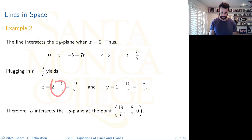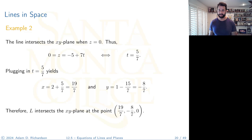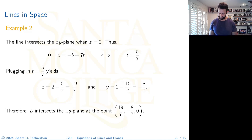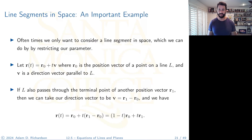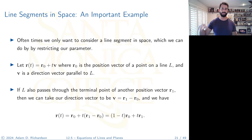Substituting t = 5/7 into x = 2 + t gives x = 2 + 5/7 = 19/7, and into y = 1 − 3t gives y = 1 − 15/7 = −8/7. So the line intersects the XY plane at (19/7, −8/7, 0). That's how we find where a line in space crosses a coordinate plane.